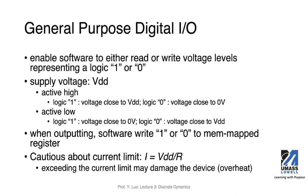When we say active low, it's the opposite. In the case of active low, logic one corresponds to a voltage close to zero, and logic zero has a corresponding voltage close to VDD. You need to check the datasheet to read the symbols to understand if it's active high or active low. In a timing diagram, if a signal is active low, it typically has a little bar on top of the signal name. Otherwise, by default, signals are active high.